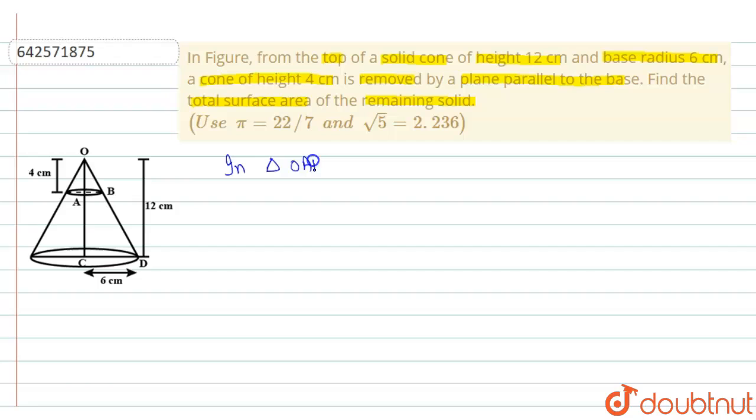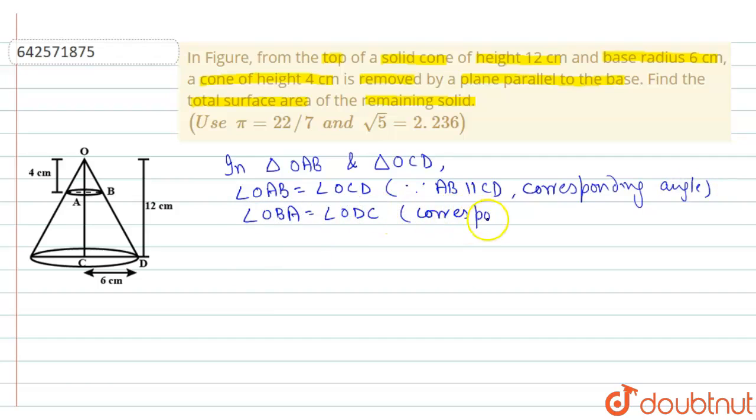In this figure, in triangle OAB and triangle OCD, angle OAB is equal to angle OCD because AB is parallel to CD, so they are corresponding angles. Then, angle OBA is equal to angle ODC. They are also corresponding angles.